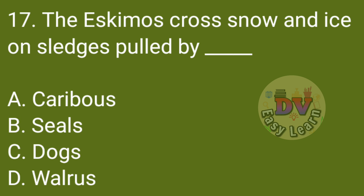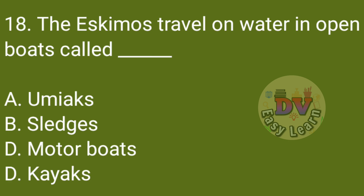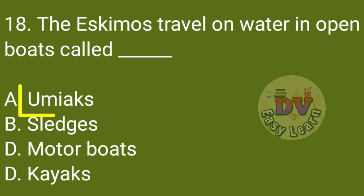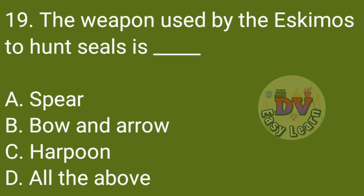Q17: The Eskimos cross snow and ice on sledges pulled by? Q18: The Eskimos travel on water in open boats called Umayaks. Q19: The weapon used by the Eskimos to hunt seals is the Harpoon.